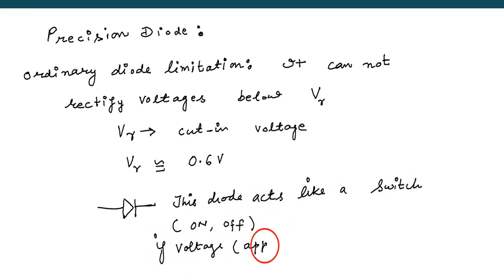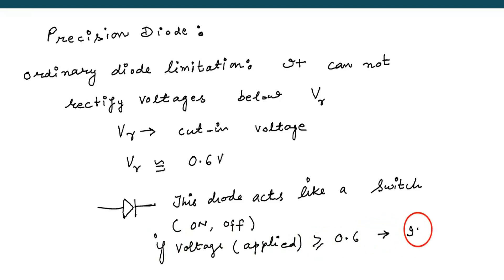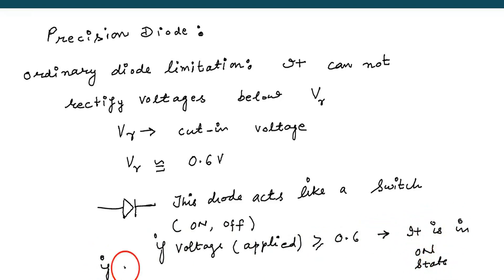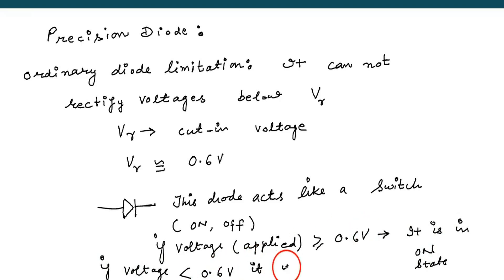Because of V-gamma, the diode acts like a switch — on or off. If the voltage is greater than 0.6V it is on; if less than 0.6V it is off.